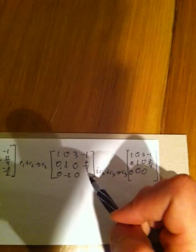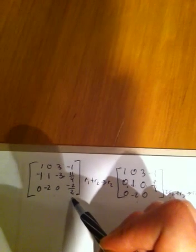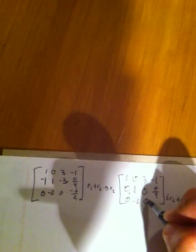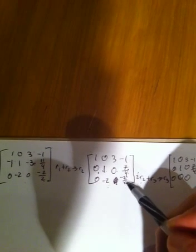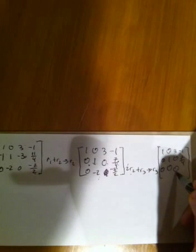And sorry, I copied this wrong. This is supposed to be negative 7 over 2, not a 0. So negative 7 over 2, and 7 over 4 times 2 is 7 over 2 plus negative 7 over 2. That's going to be a 0.